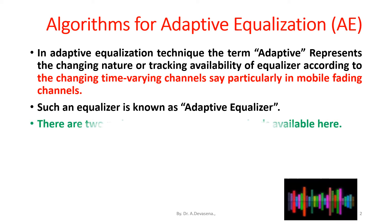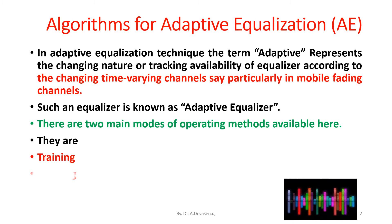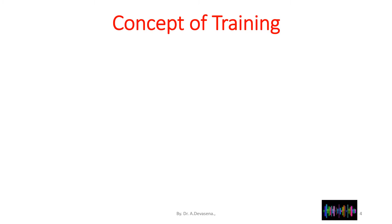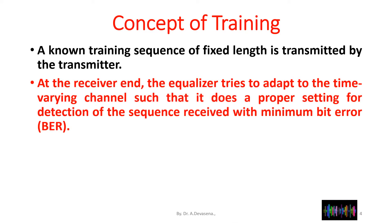There are two main modes of operating methods available: training and tracking. The equalizer's frequency response and the spectrum frequency response after equalization are shown in this diagram. A known training sequence of fixed length is transmitted by the transmitter; at the receiver end, the equalizer tries to adapt to the time-varying channel for proper setting for detection of the sequence.